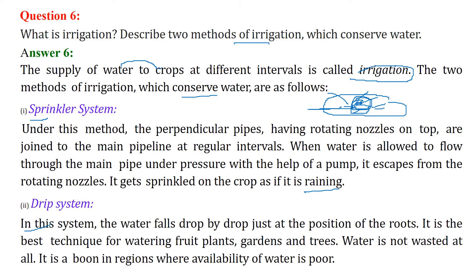The drip system: water falls drop by drop directly at the position of the root. This is the best technique for watering fruit plants, gardens, and trees. Water is not wasted at all, and where there is scarcity of water, the drip system is the best.